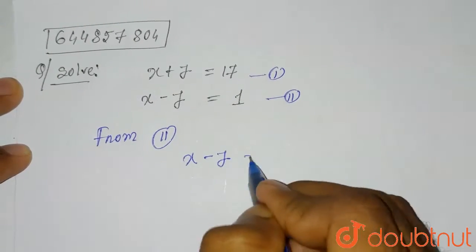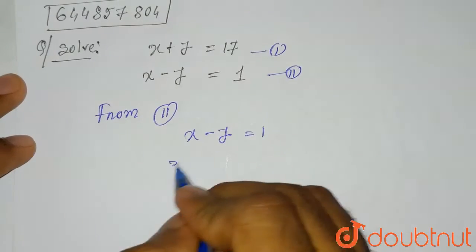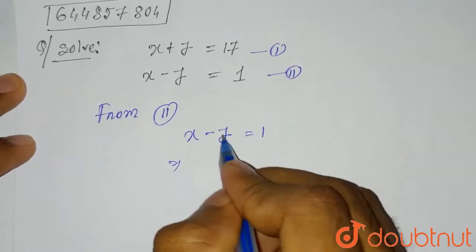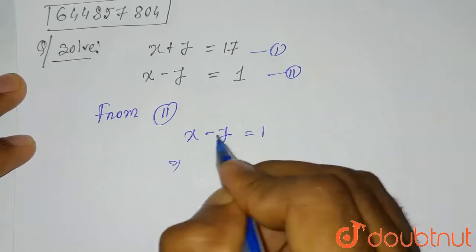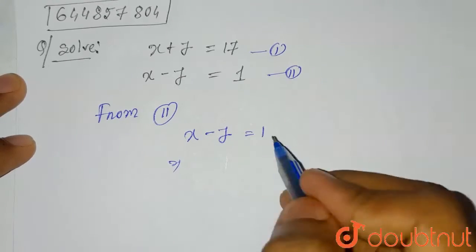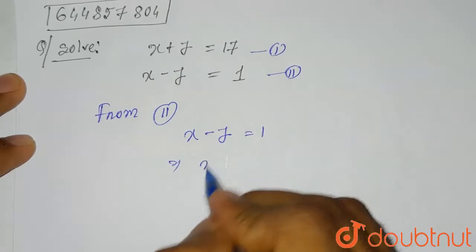From the second equation, x minus y equals 1. From here, if we bring this y on the right hand side it will be plus y, and if we bring this 1 on the left hand side it will be minus 1, because changing the side will change the sign.